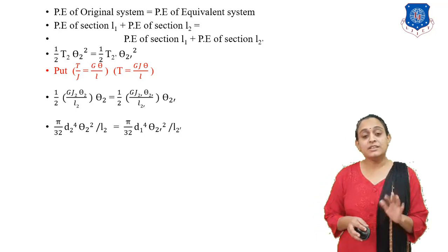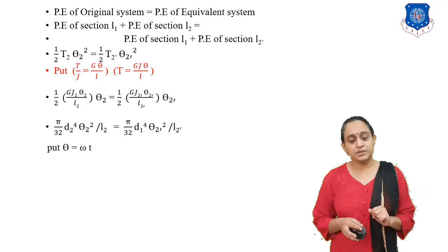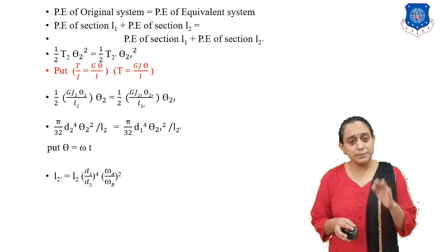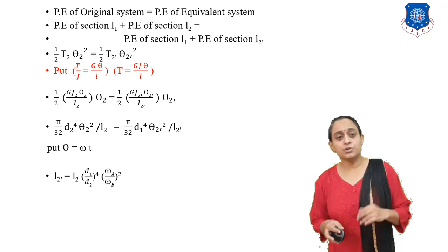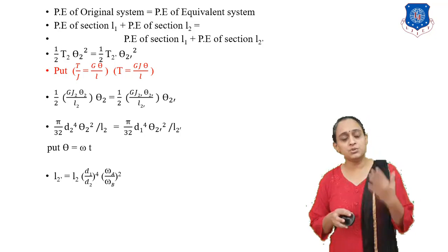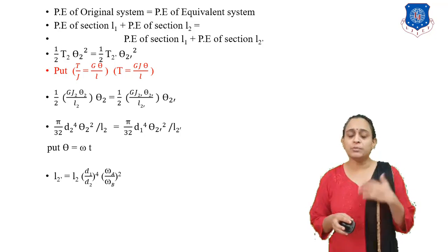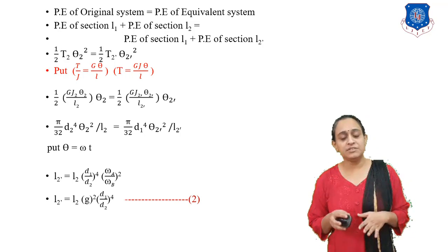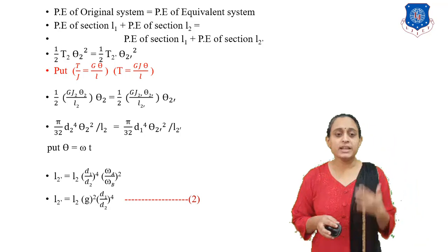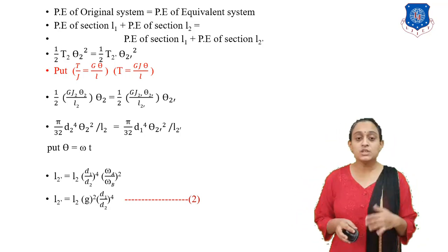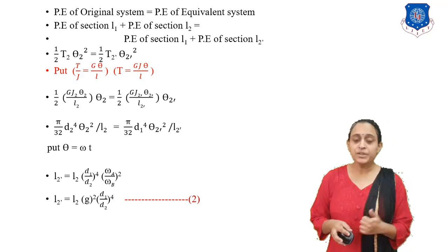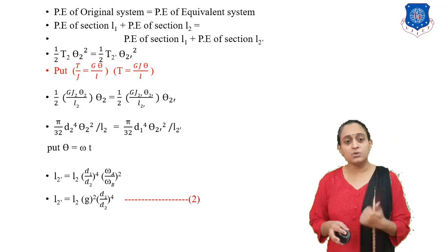From this equation, substituting theta = omega × t and putting in the values of theta2, we get L2-dash equals L2 × (d1/d2)⁴ × (omega-A / omega-B)². Finally, L2-dash equals L2 × G² × (d1/d2)⁴. This is Equation 2, which you need to remember, as it helps find L2-dash. The equivalent length L-equivalent equals L1 plus L2-dash.